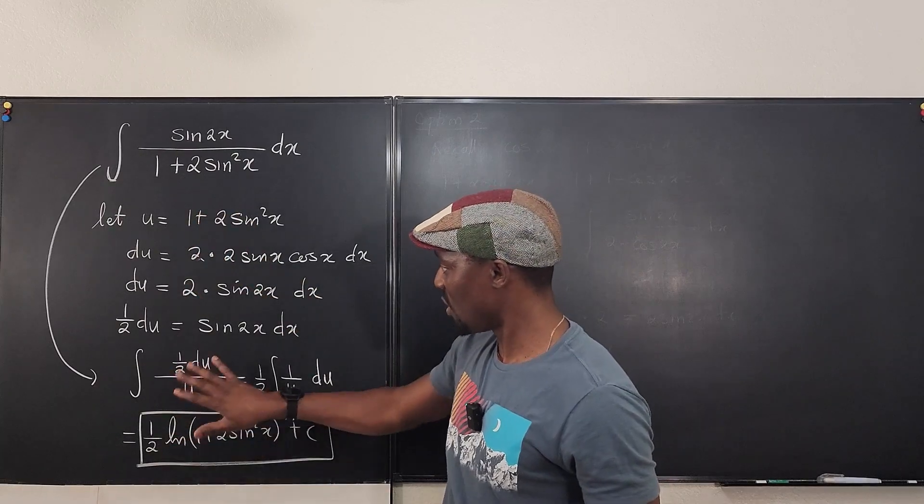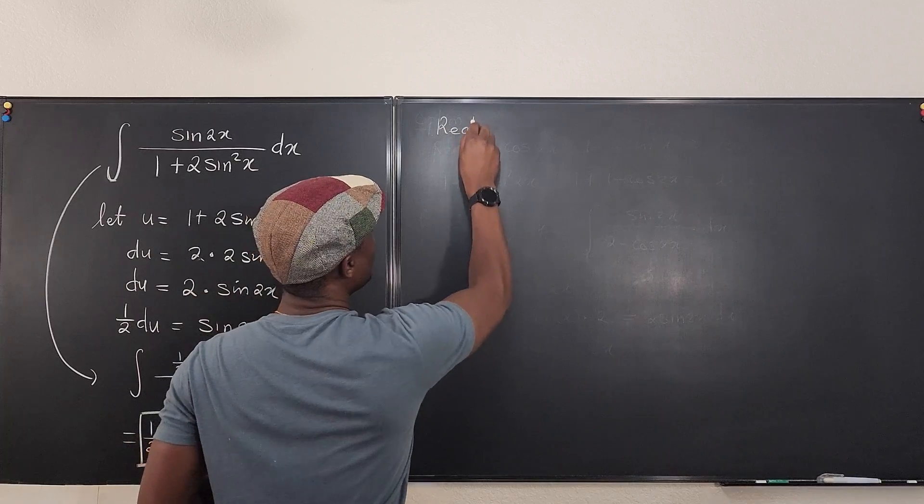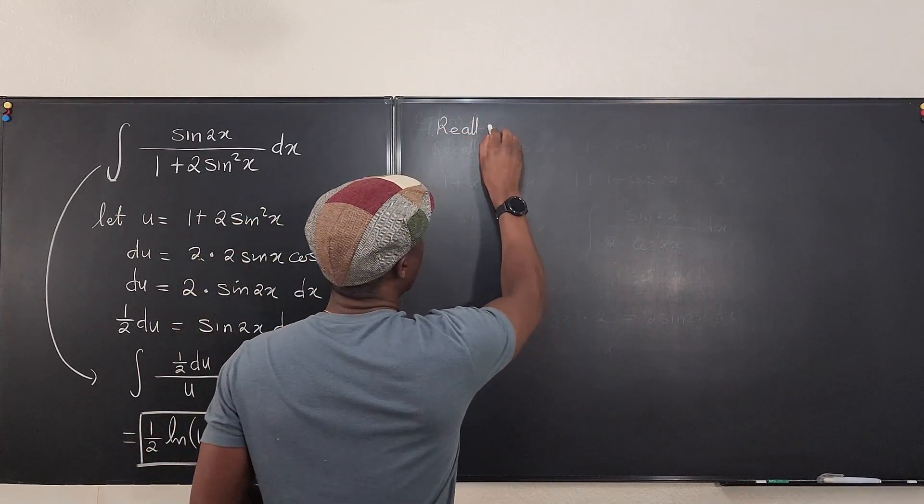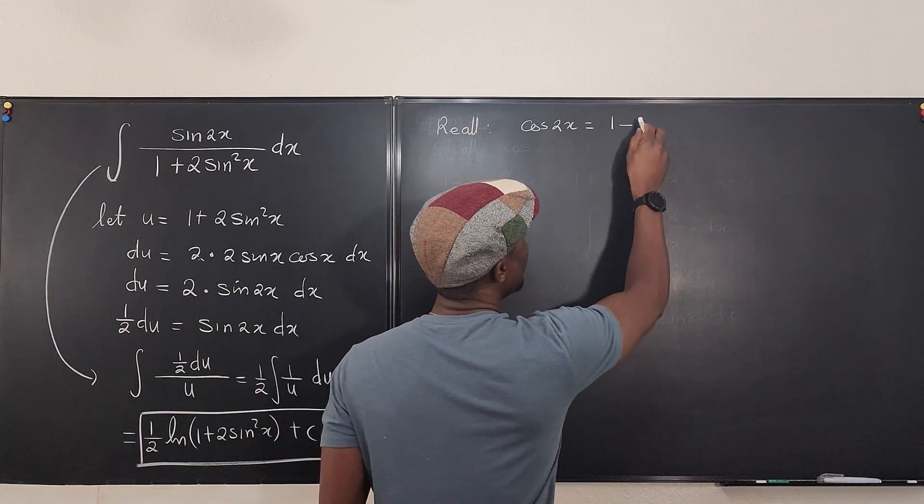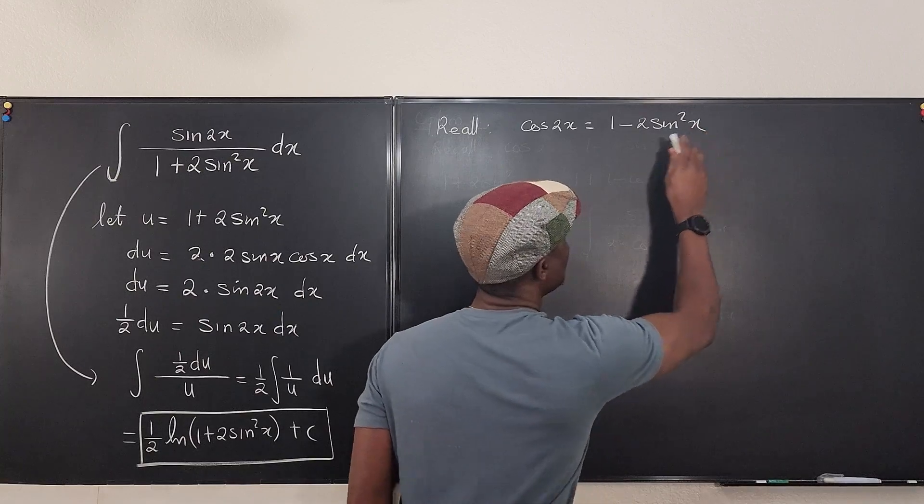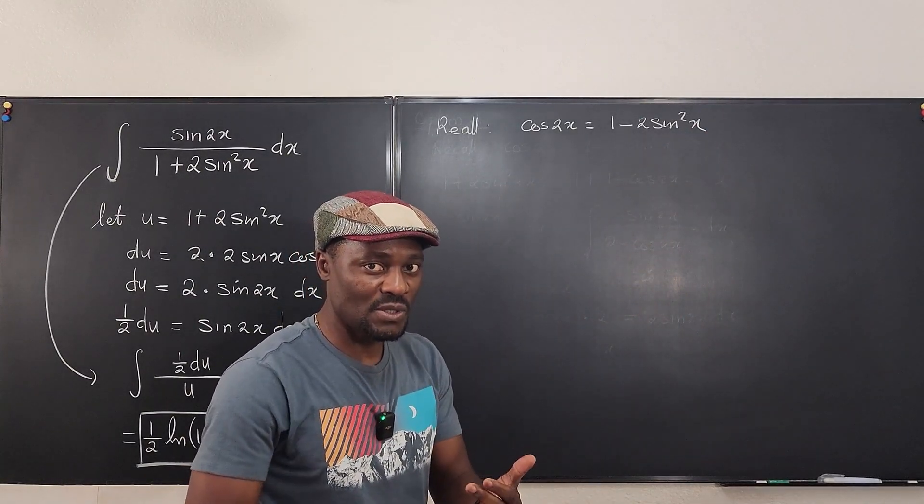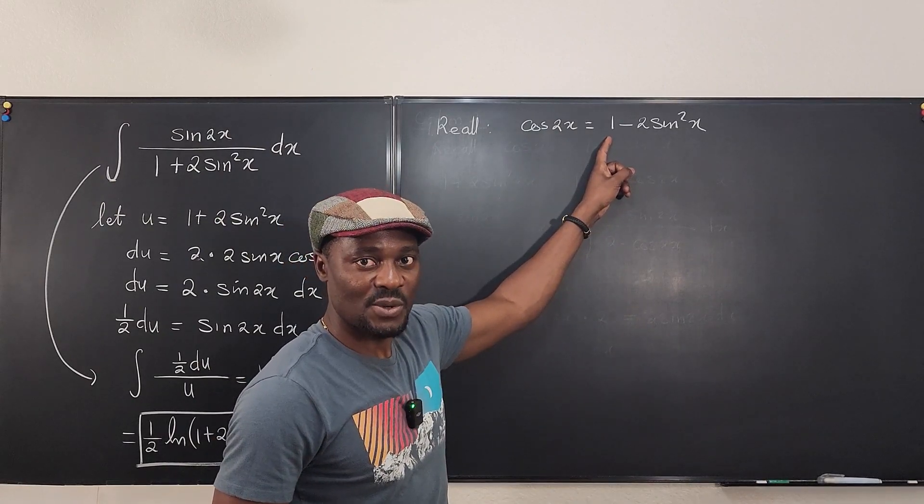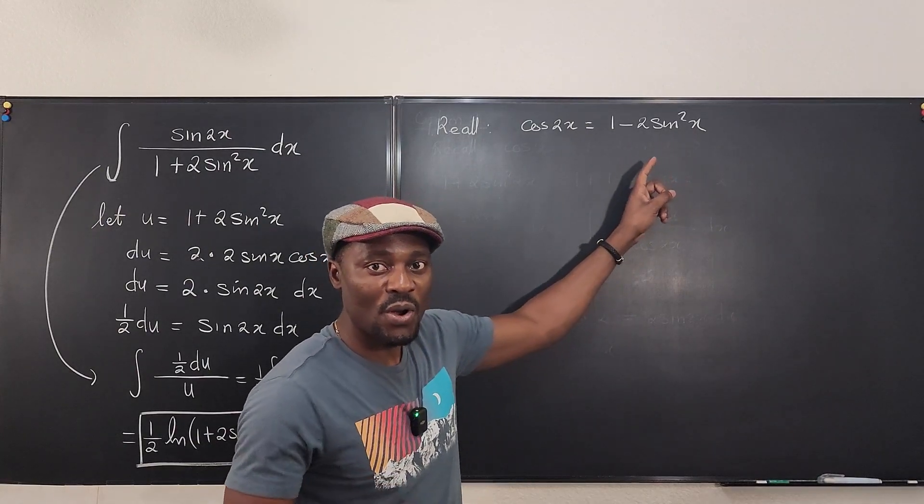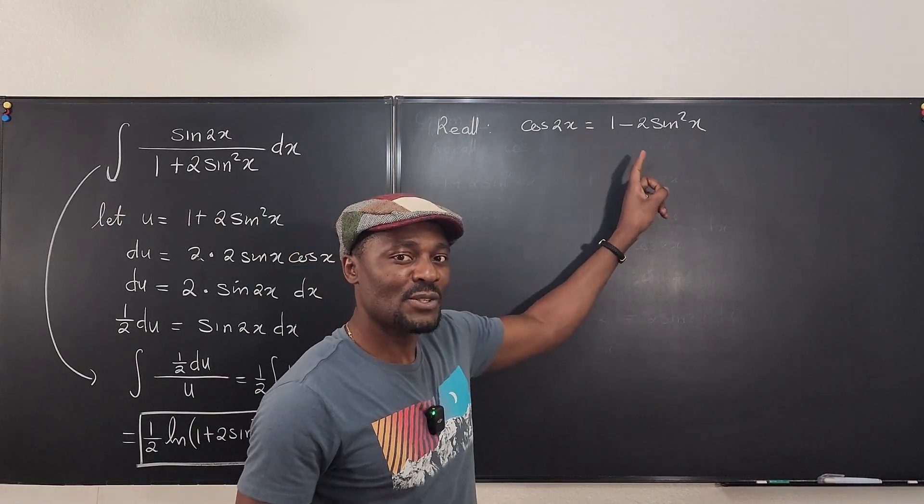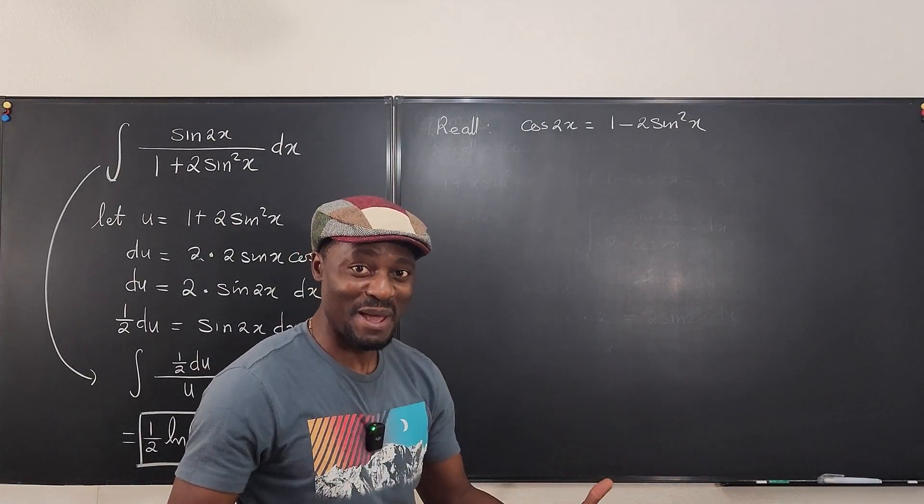Because if the denominator is cosine 2x, the derivative of cosine 2x will contain sine 2x. And that's what I did here. I'm just going to show you what I did. I'm not going to do the integration. So I said, recall that cosine 2x can be written as 1 minus 2 sine squared x. This is from your trig class. The double angle identity for cosine, you can write it as cosine squared x minus sine squared x, or 1 minus 2 sine squared x, or 2 cosine squared x minus 1. Those are the three options. You need to remember these things.